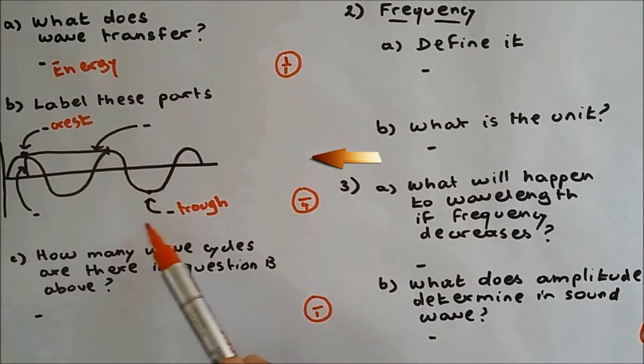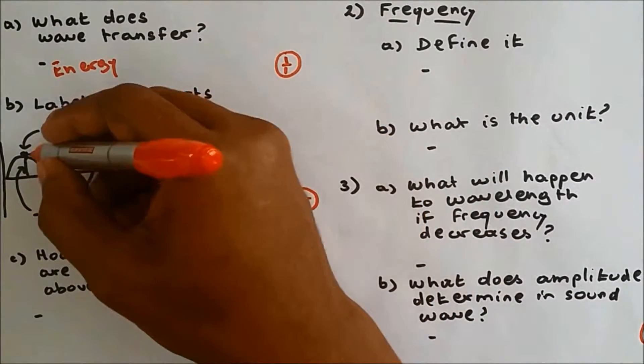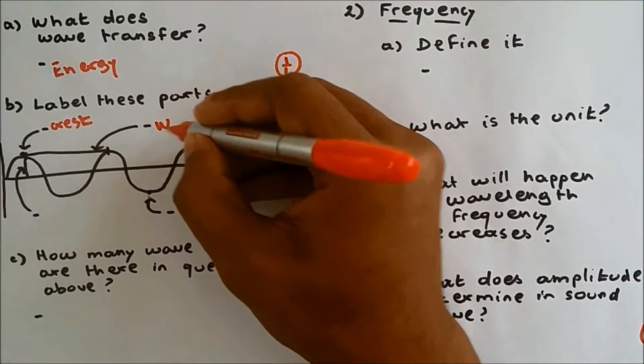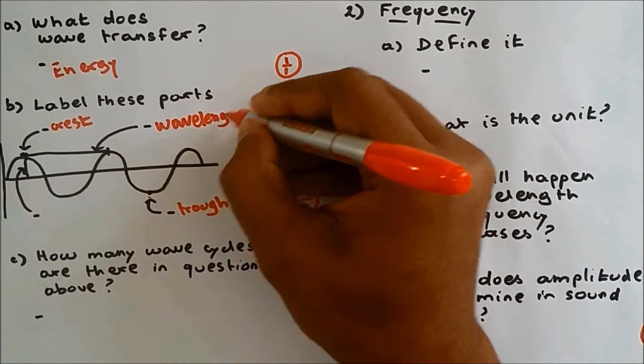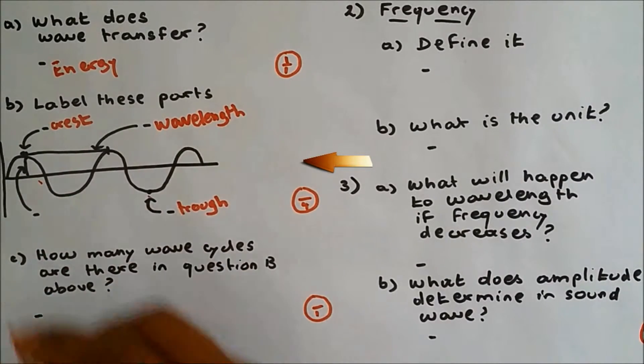The distance from the crest to crest or from trough to trough is called wavelength. So from here to here is wavelength. And the height of the wave is amplitude.